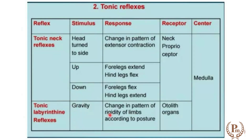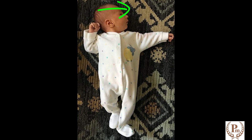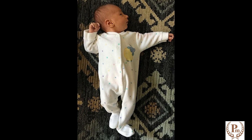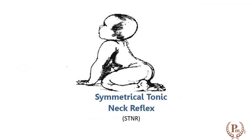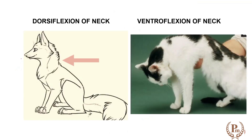Let us understand the table showing the reflexes, their stimulus, response, receptors, and center. For tonic neck reflexes, if the head is turned to one side — as seen in babies and infants — the limbs on that same side (ipsilateral) are extended, while the opposite side limbs are flexed. Because one side extends and the other flexes, we call this the asymmetrical tonic neck reflex.